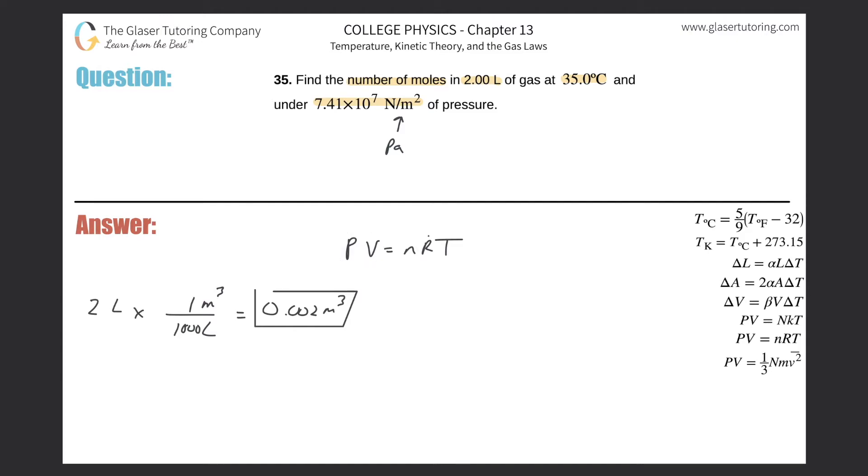R will be the value of 8.31. And then the temperature is in kelvin, so you've got to convert this into kelvin - just add 273 to that value. What do we get? Looks like 308.